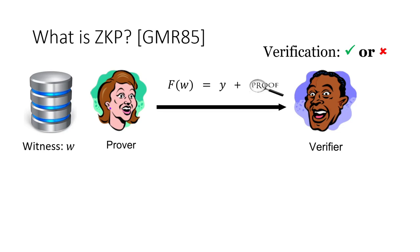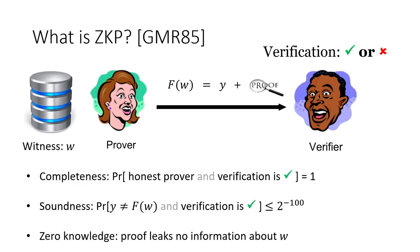First, let me introduce the definition of the ZKP. A Zero-Knowledge Proof enables a prover to convince a verifier that some statement is true. Such a Zero-Knowledge Proof has three properties: completeness, soundness, and zero-knowledge. Completeness enables an honest prover to pass verification with probability 1. Soundness enables an honest verifier to detect a malicious prover except with negligible probability. And zero-knowledge means that the proof does not leak any information about the prover's secret.